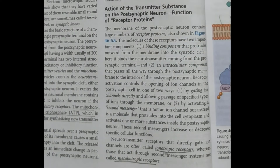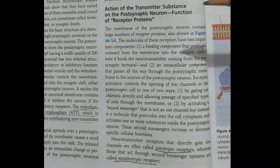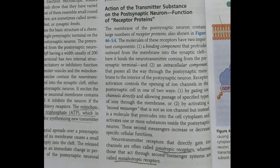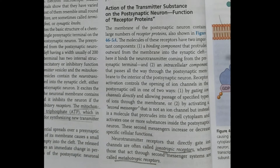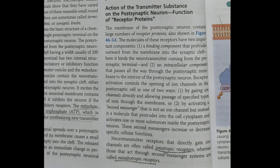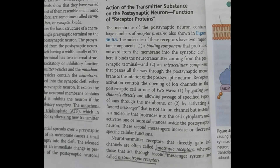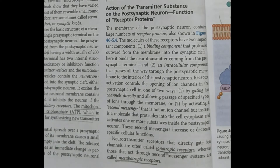The next topic is the action of the transmitter substance on the postsynaptic neuron and the function of those receptor proteins. Receptor proteins are present in the postsynaptic terminal after the neurotransmitter has discharged. Their role is to enable the influx or efflux of different ions, which in turn generate the action potential in the next neuron.